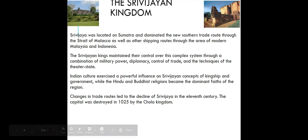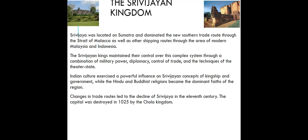Srivijaya was located on Sumatra and dominated the trading routes throughout the Strait of Malacca as well as the areas of present-day Malaysia and Indonesia. The political system knit together four different ecological zones under one king. This kingdom was built upon trade, and kings maintained power through a combination of military power, diplomacy, control of trade, and the techniques of the theater state — using the splendor of their capital to attract resources and labor. They also patronized Buddhist monasteries and schools. Culture from India was a powerful influence, particularly in government, and both Buddhism and Hinduism became dominant faiths in the region.